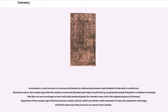In economics, a local currency is a currency not backed by a national government and intended to trade only in a small area. Advocates such as Jane Jacobs argue that this enables an economically depressed region to pull itself up by giving people a medium of exchange they can use for services and locally produced goods. Opponents argue that local currency creates a barrier interfering with economies of scale and comparative advantage, and that in some cases it can serve as a means of tax evasion.